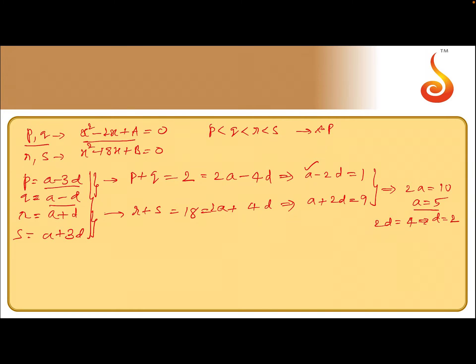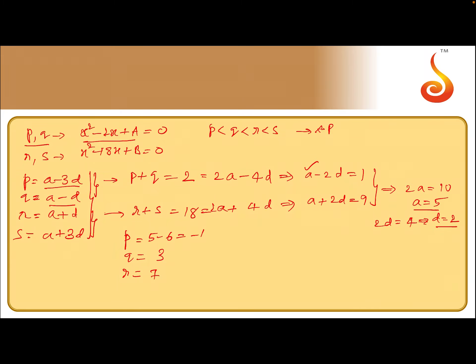Now we can write down the values of p, q, r, s. p = a - 3d = -1, q = a - d = 3, r = a + d = 7, and s = a + 3d = 11.